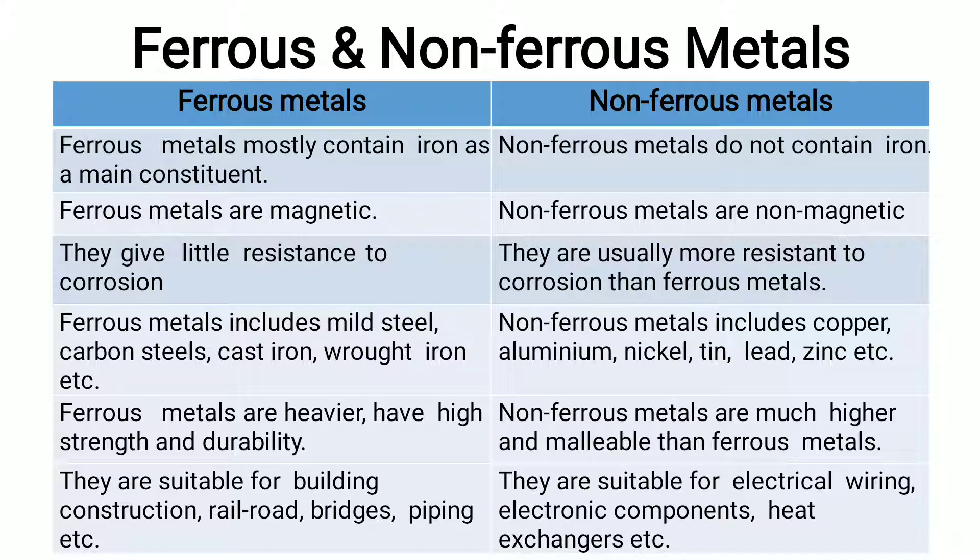Ferrous and non-ferrous metals can be distinguished on the basis of different points. First, ferrous metals mostly contain iron as their main constituent whereas non-ferrous metals do not. Second, ferrous metals are generally magnetic whereas non-ferrous metals are non-magnetic.